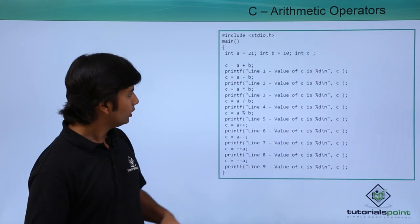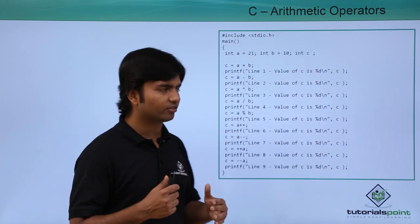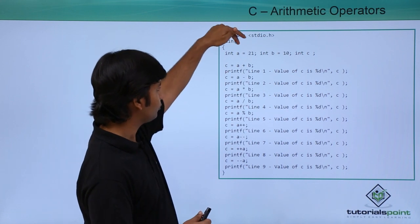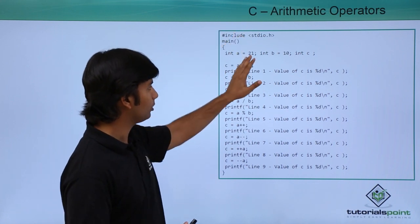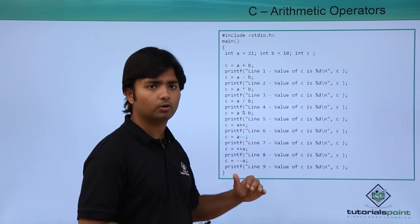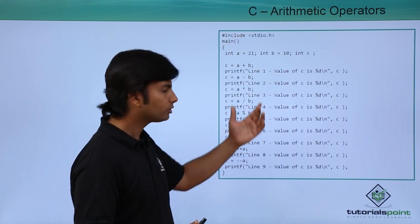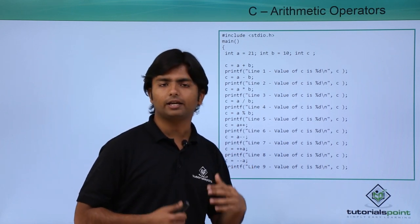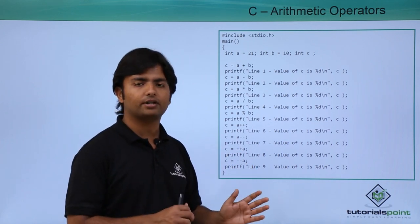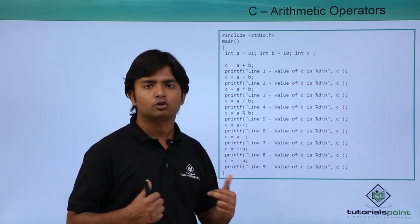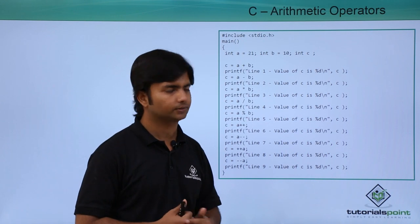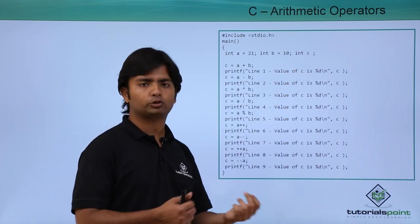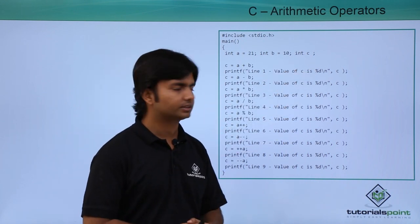Here we have a quick example. First, I defined a couple of variables a and b, because most of the operators we have discussed are binary operators — meaning operators having two operands. And one more variable c for storing the result.